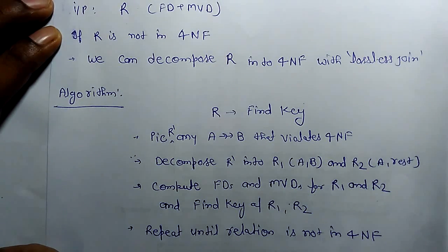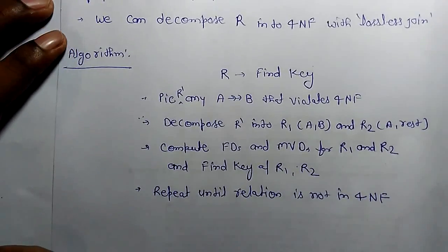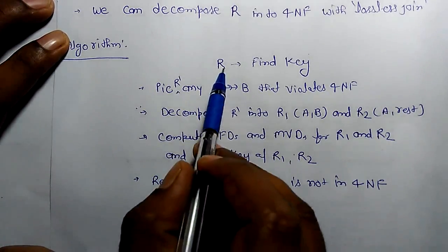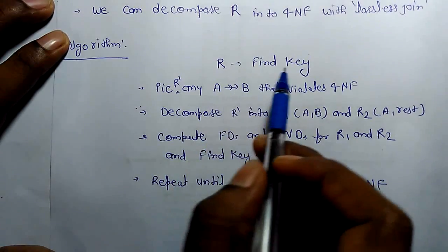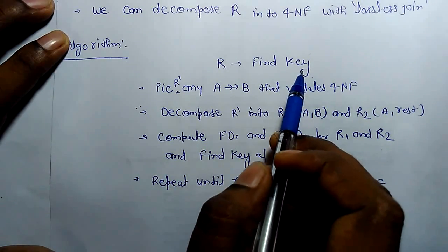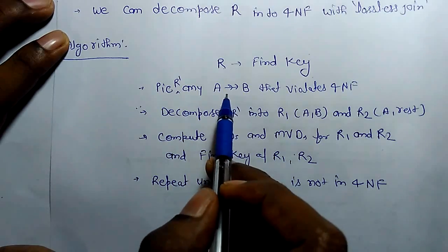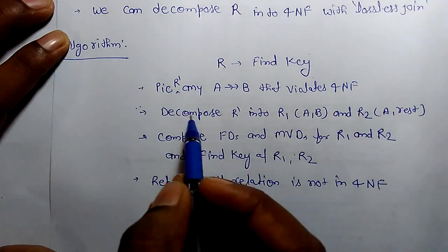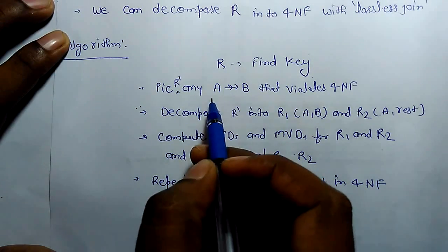What is the algorithm for decomposition? First, if the relation is given, we will find the key and verify the multivalue dependency which violates 4NF. Which violates 4NF means if it is non-trivial relation, then A should be a super key. So if it violates,